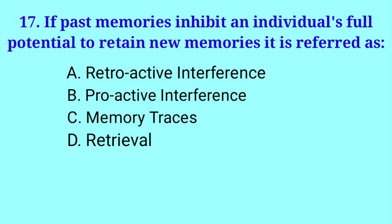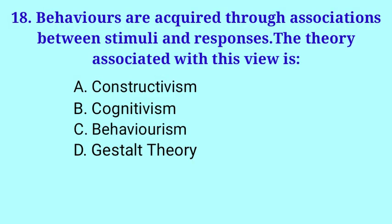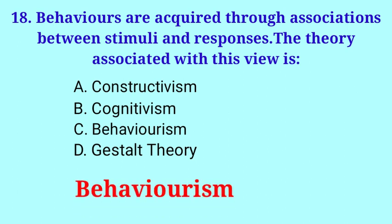If past memories inhibit an individual's full potential to retain new memories, it is referred to as Proactive interference. Behaviours are acquired through associations between stimuli and responses. The theory associated with this view is Behaviorism.